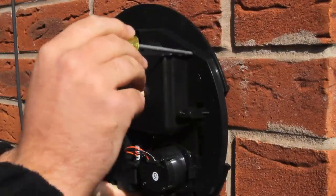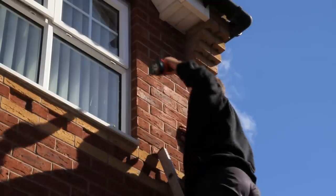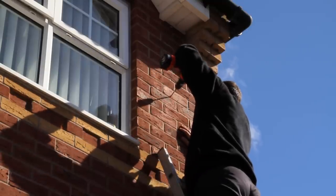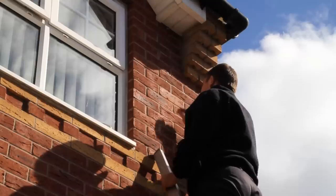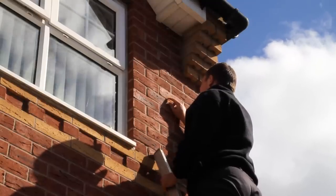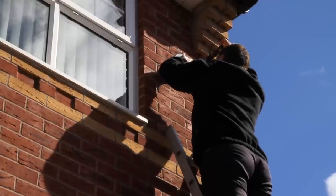Use the siren backplate as a guide to mark the wall in the desired location. Drill the four marked points on the wall and insert the roll plugs provided. Line up the backplate with the drilled holes and secure into place with screws provided. Warning, ensure the tamper switch is fully depressed when the siren is mounted.